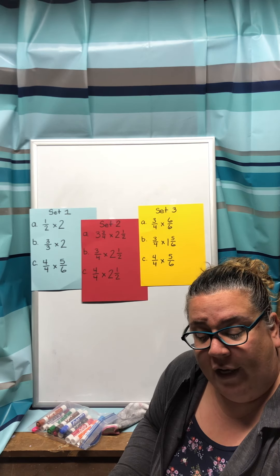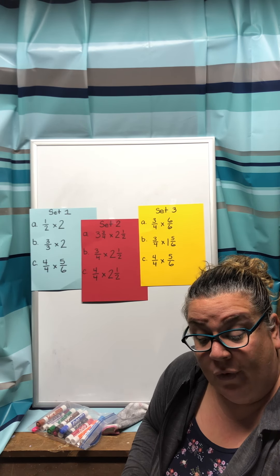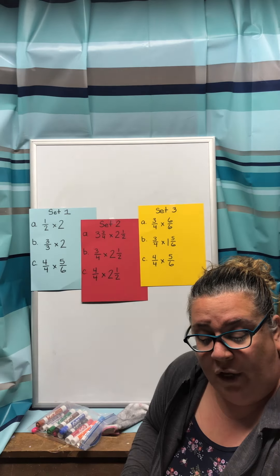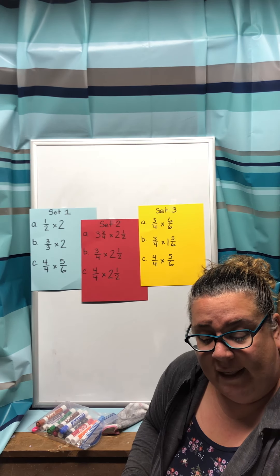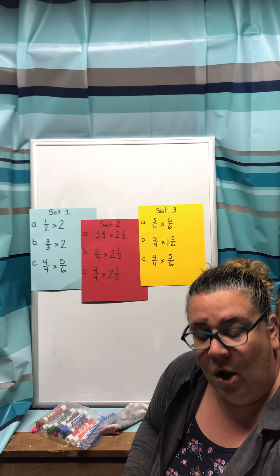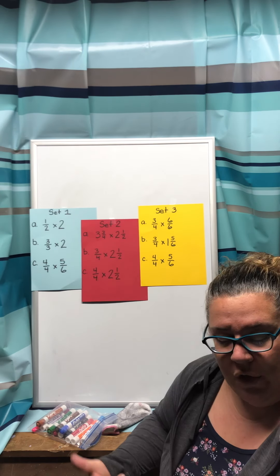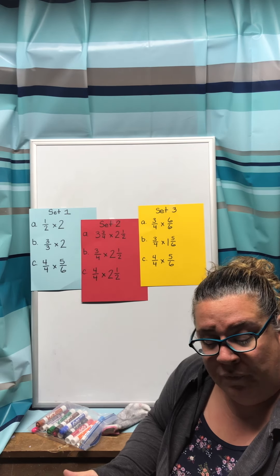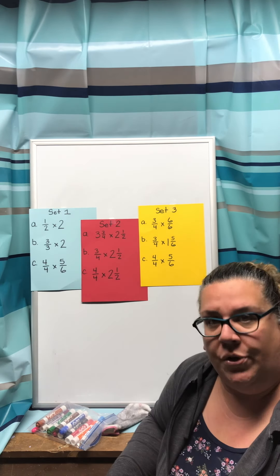And if you look at the speech bubble on the bottom, it says reasoning: how can you use what you know about multiplying fractions to help you find the problem with the greatest product? So we'll start with the greatest product, and they want us to circle them.